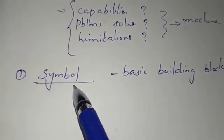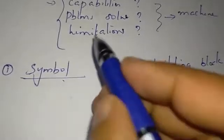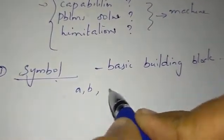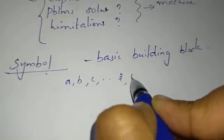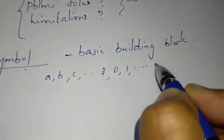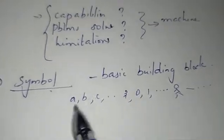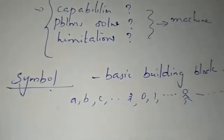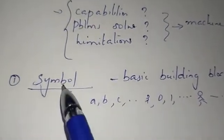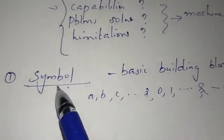In this subject, we have a basic thing called Symbol. A symbol is called any letter — a letter, a number, or a picture. Anything like a letter, a number, or a picture can be said to be a symbol.